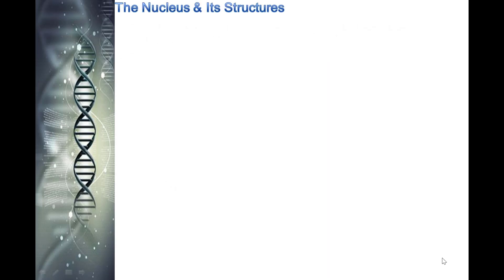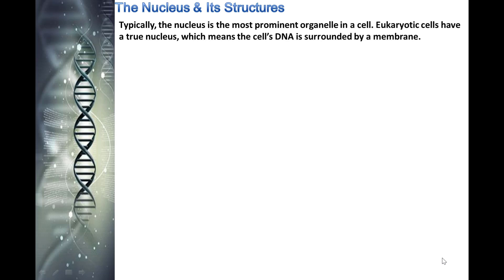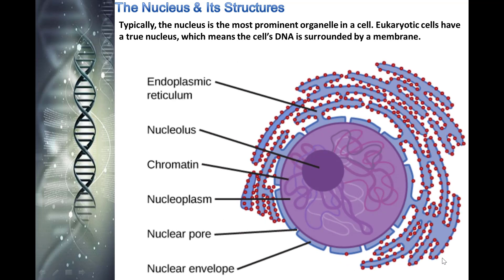The nucleus and its structure: typically the nucleus is the most prominent organelle in a cell. Eukaryotic cells have a true nucleus, which means the cell's DNA is surrounded by a membrane. The nucleus stores chromatin — DNA plus proteins — in a gel-like substance called the nucleoplasm. The nucleolus is a condensed region of the chromatin where ribosomes are synthesized.